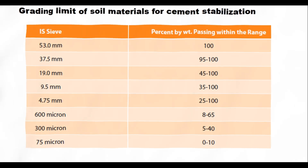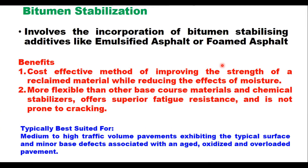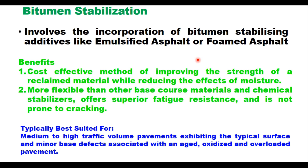In case of bituminous stabilization, it involves the incorporation of a bituminous stabilizing additive like emulsion or foamed asphalt. The benefits are that it is a cost-effective method of improving the strength of reclaimed material while reducing the effect of moisture. It is more flexible than other base course materials and chemical stabilizers, offers superior fatigue characteristics, is not prone to cracking, and is typically best suited for medium to high traffic volume pavements exhibiting typical surface and minor base defects associated with aged, oxidized, and overloaded pavements.